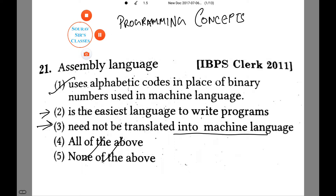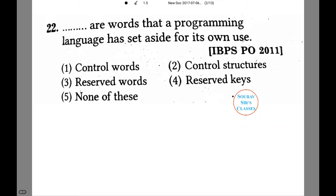Let's see another question. Dash are words that a programming language has set aside for its own use. These are the following options. First is control words, second is control structures. Both of these can be struck out because they are not the correct answer.